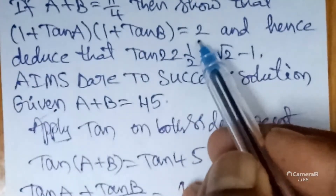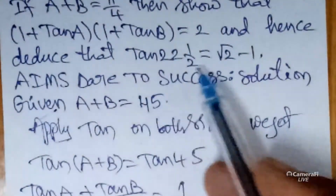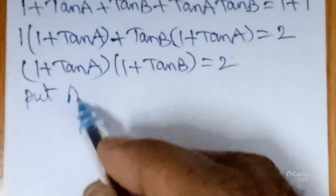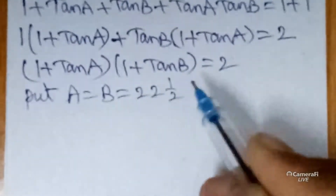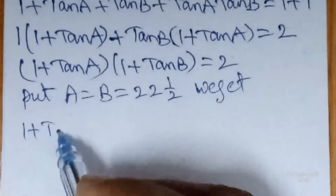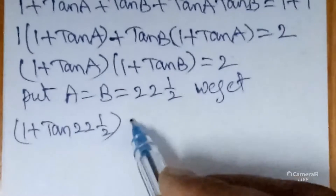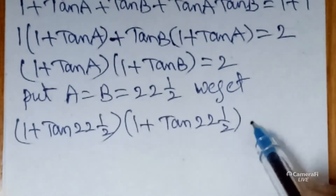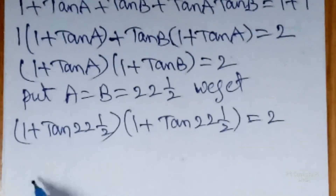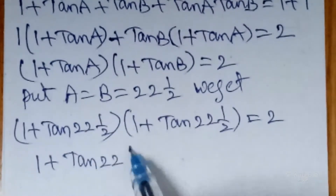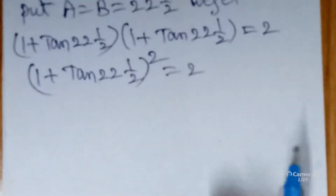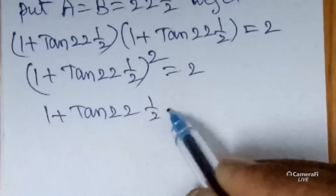We have proved that (1 + tan a)(1 + tan b) = 2. Next, to find tan 22.5°, substitute a equals b equals 22 and a half degrees. We get (1 + tan 22.5°)(1 + tan 22.5°) equals 2, which is (1 + tan 22.5°) squared equals 2. Taking the square root on both sides: 1 plus tan 22.5° equals root 2.